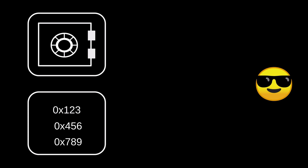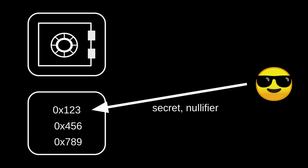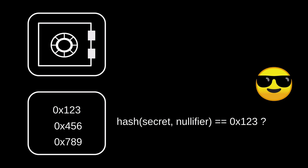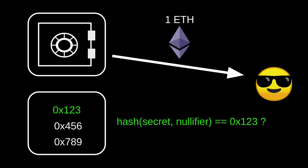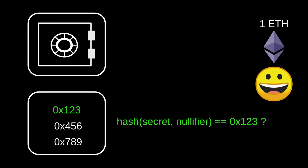So now let's see how withdrawal works in Tornado Cash. First, I'll explain how it's done incorrectly — we'll first withdraw in a way that reveals the identity of the withdrawer, and then we'll see how to fix this problem. The wrong way to withdraw is that the withdrawal reveals the secret and the nullifier. The smart contract checks that the hash of the secret and the nullifier is equal to 0x123, which is recorded in the Tornado Cash smart contract. If it is, then Tornado Cash will send the one Ether back to the caller. But in this process, it reveals the identity of the person who withdrew.